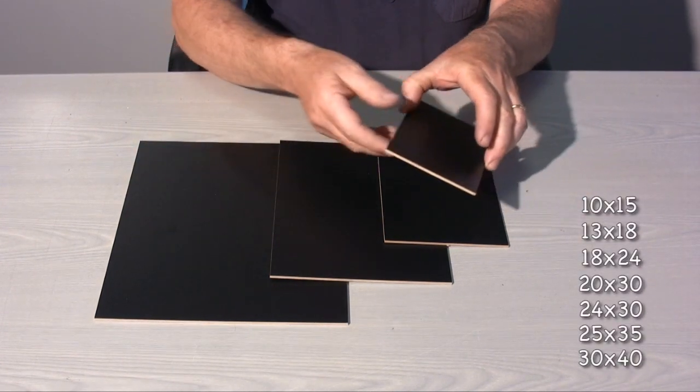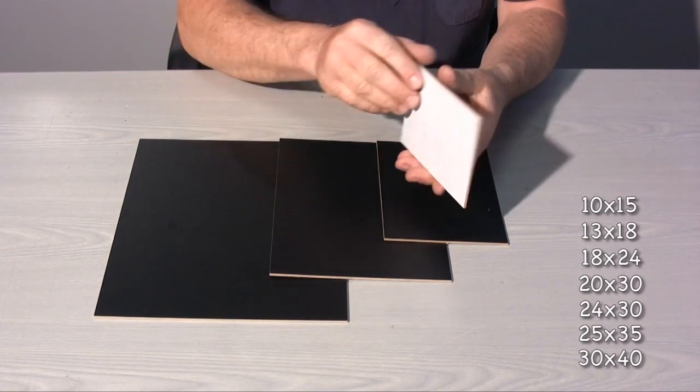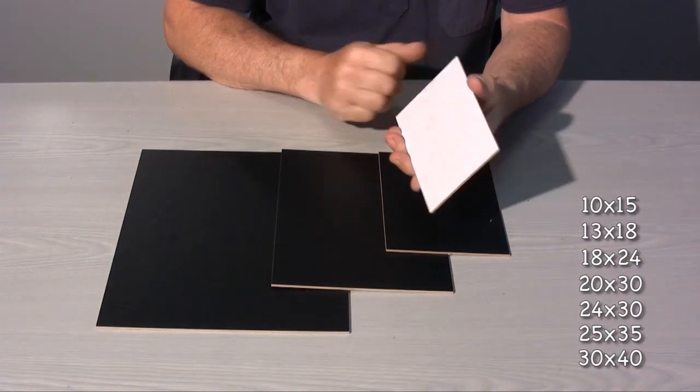Any carton can be used for a backing board as long as it is between 2 mm and 2.5 mm thick.